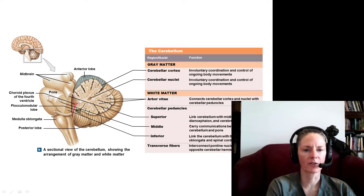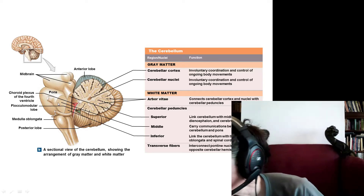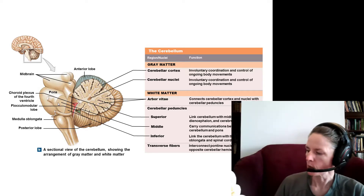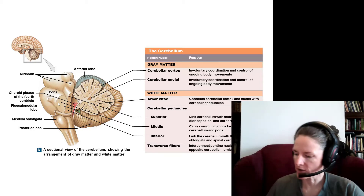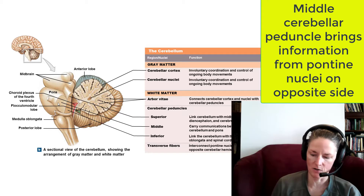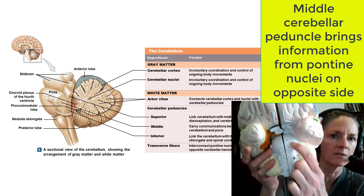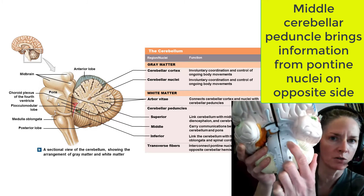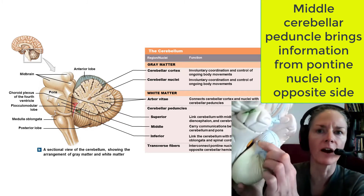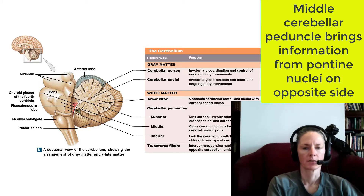Since we've cut this in sagittal view, you can also see inside the fourth ventricle and some of that choroid plexus inside that makes our cerebrospinal fluid. As for the peduncles, the middle cerebellar peduncle is one we've already seen before. It brings information from pontine nuclei to the cerebellar cortex. Information from the pontine nuclei is sent across the pontine transverse fibers and then via the middle cerebellar peduncle to the cerebellum.